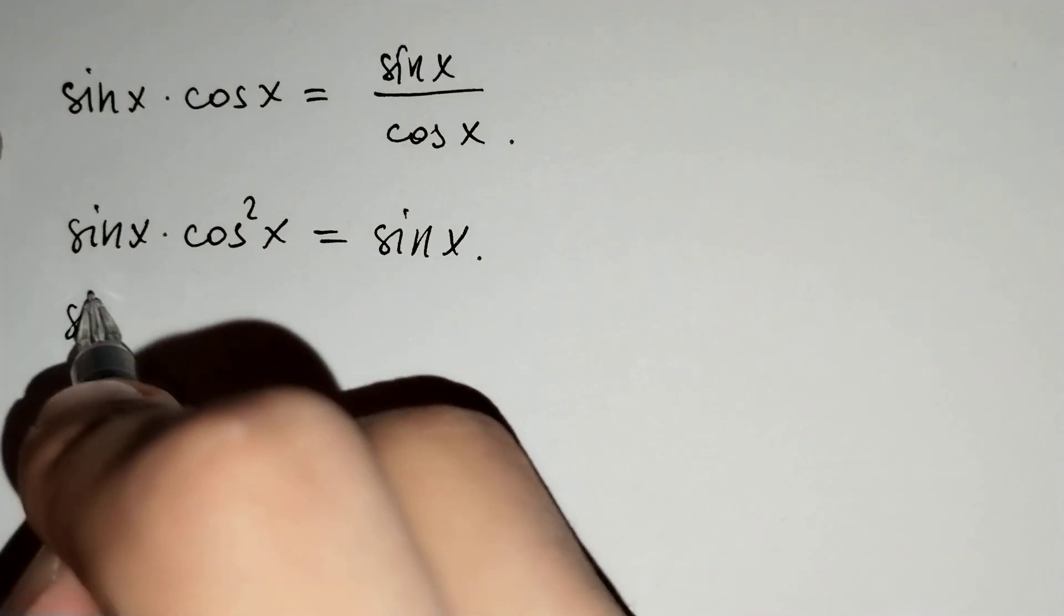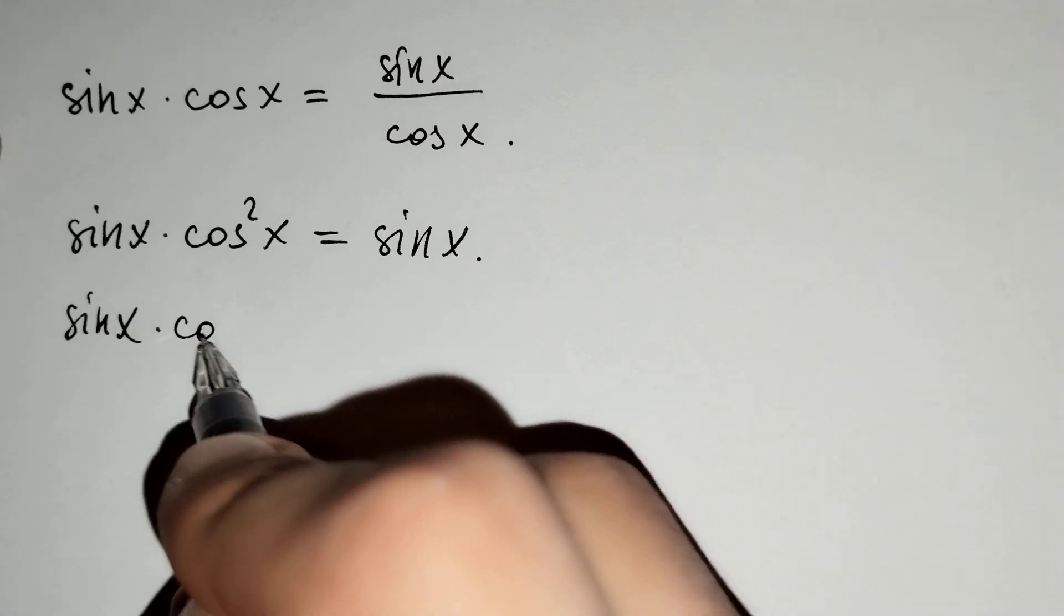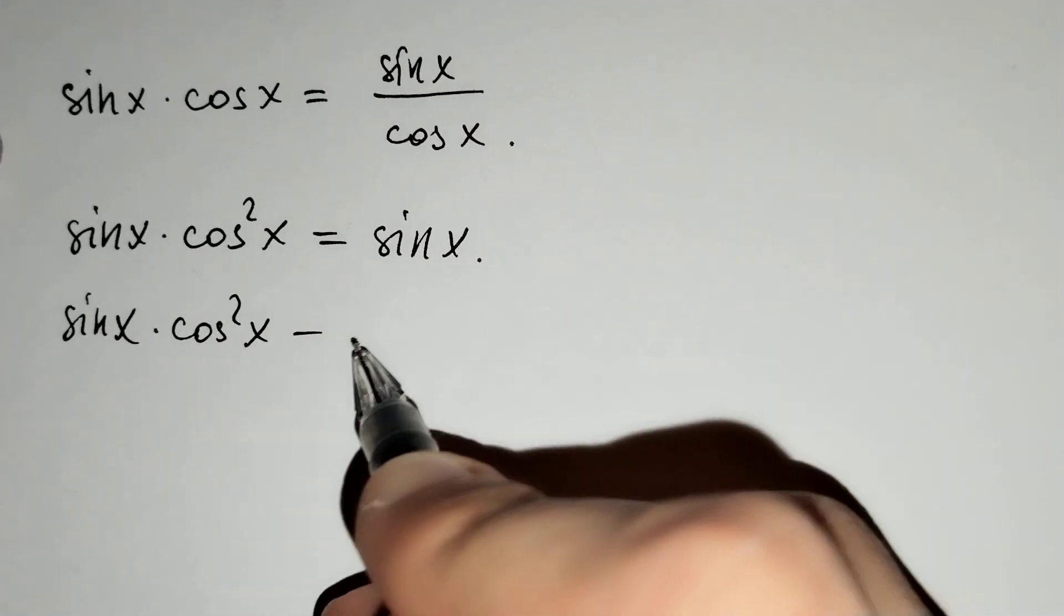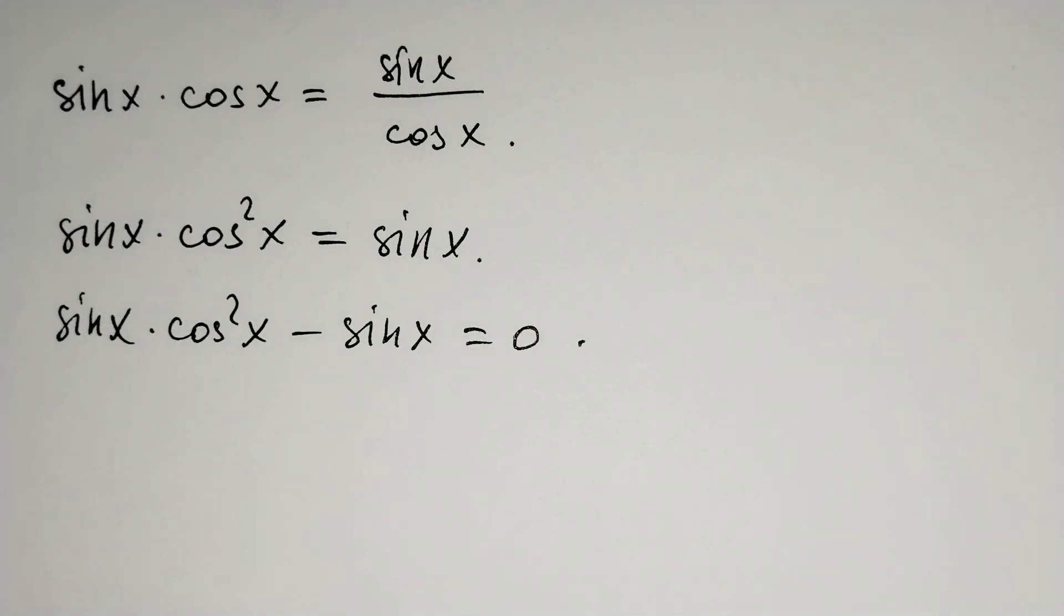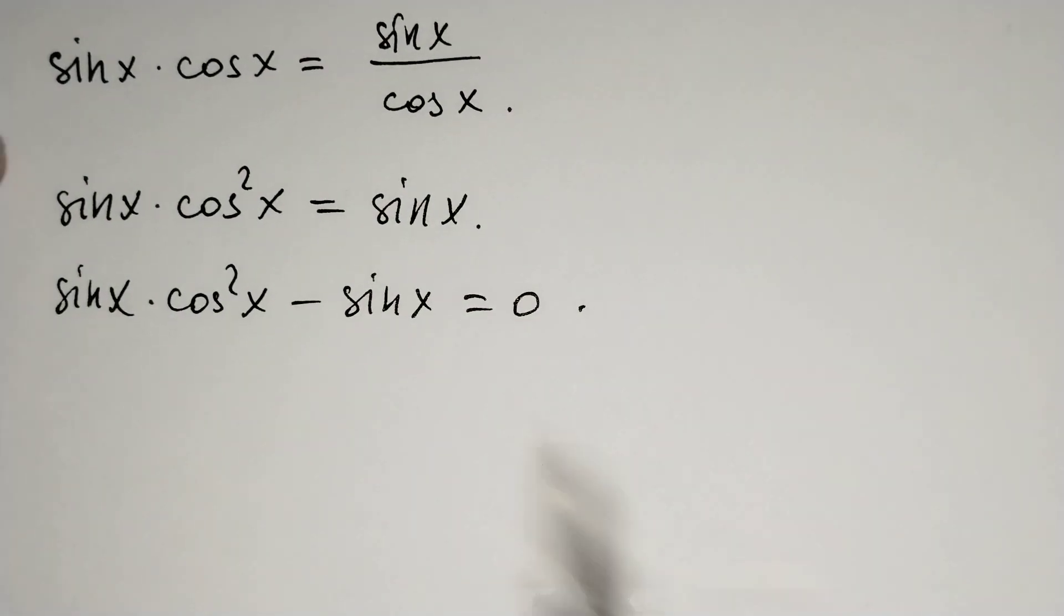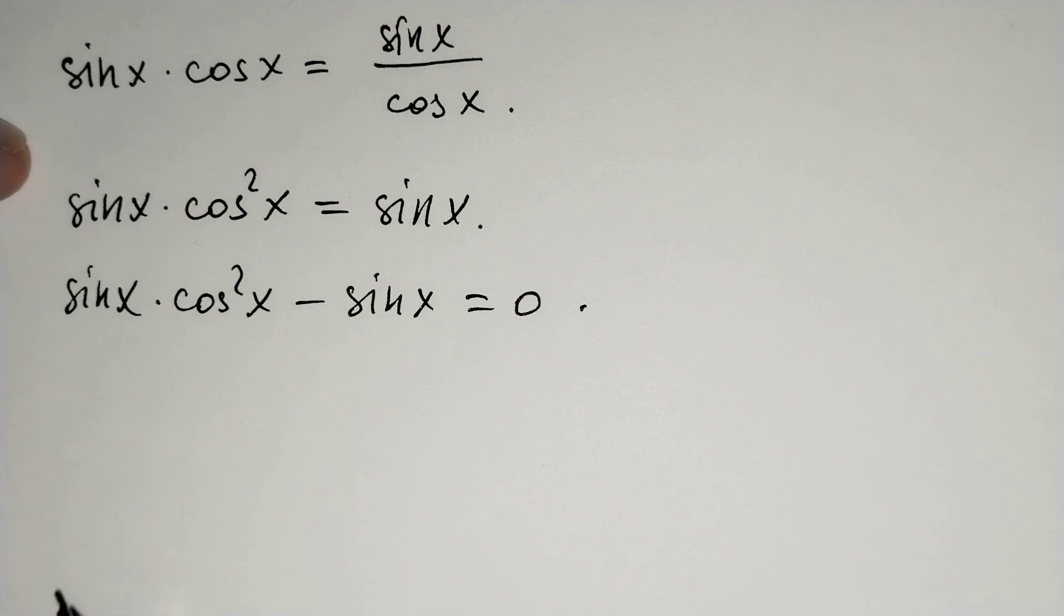Then, sin x times cosine squared x minus sin x equals 0. The sin x terms are the same, so we can factor it out of the brackets.